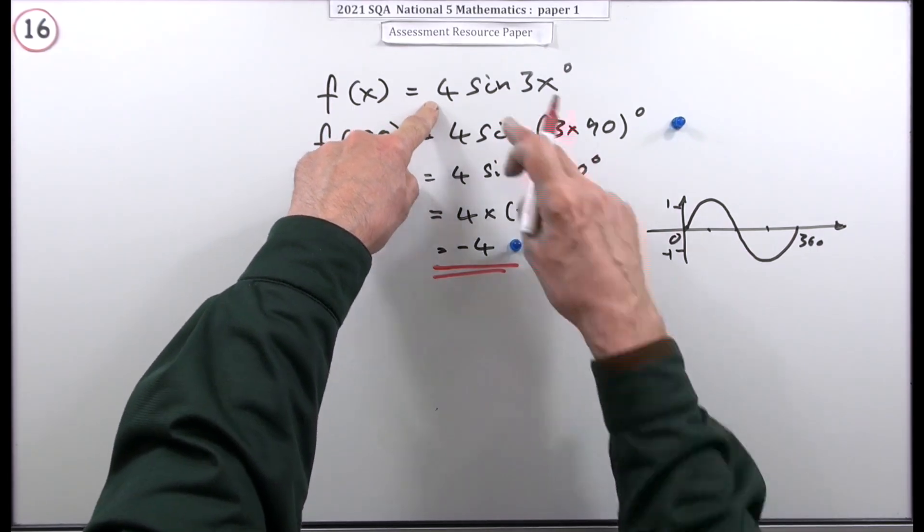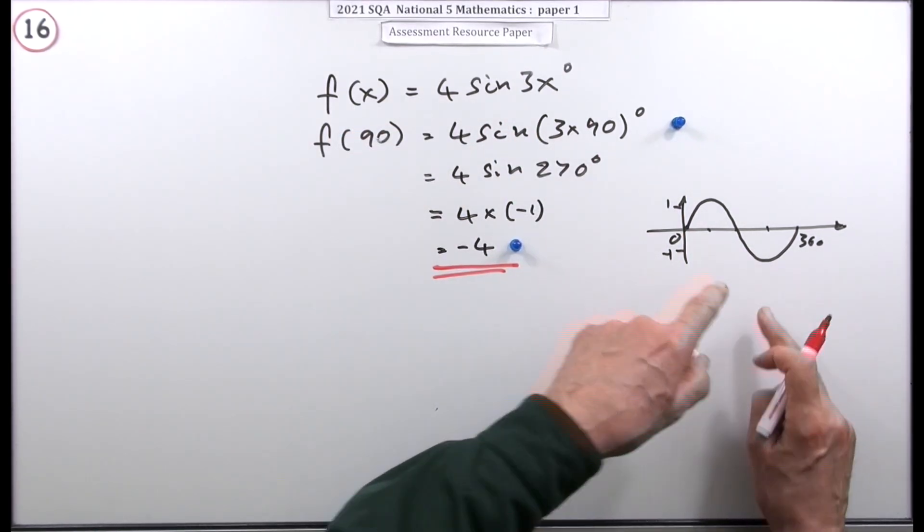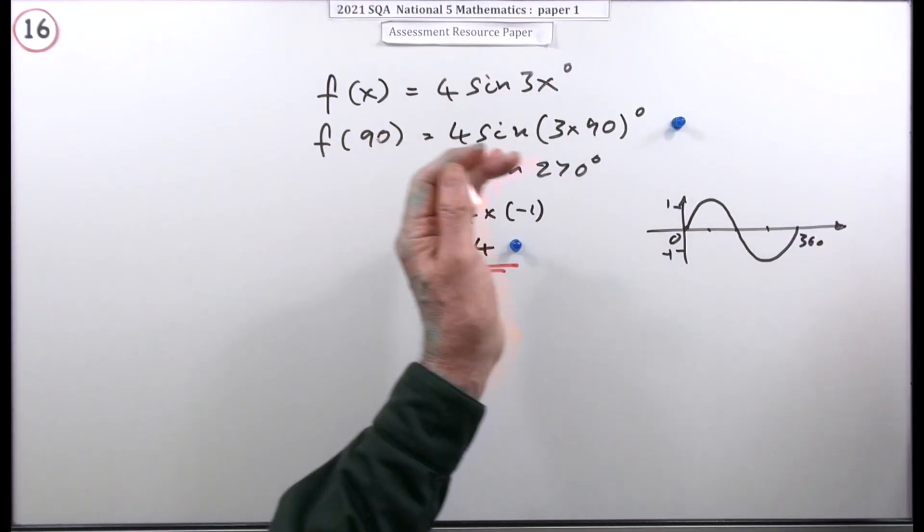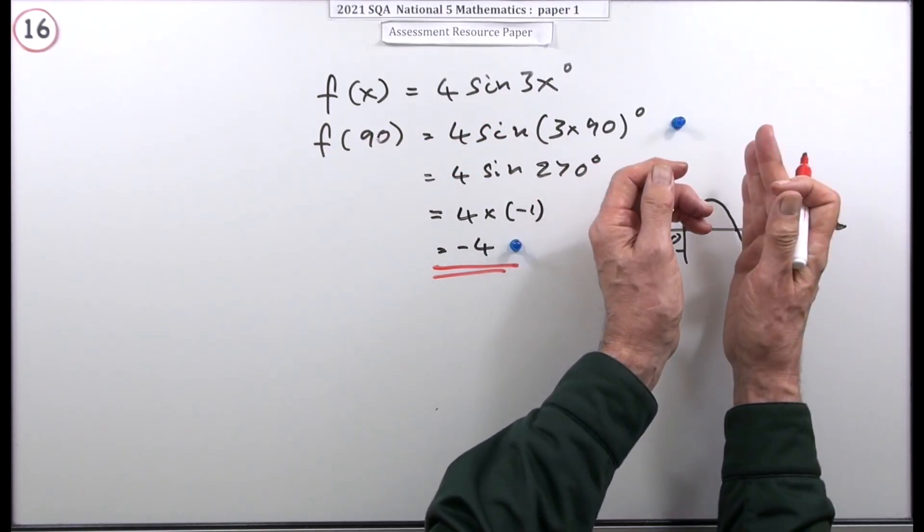Now that isn't the graph of this of course, that's just the basic sine graph. Because this graph is 4 times higher and with a 3x it's been squashed up to only a third of the length.